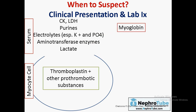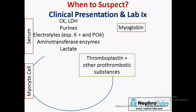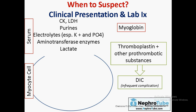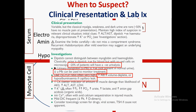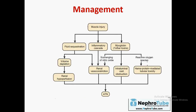Some patients with rhabdomyolysis may develop DIC, because thromboplastin and other prothrombotic substances within the myocyte cell extravasate into the circulation — although this is an infrequent complication. Oxford Handbook also notes that albumin may be increased or decreased depending on volume status and capillary leak, that urinary myoglobin may be negative in about 20 percent of patients, and that urinary myoglobin may be used to monitor treatment if present.